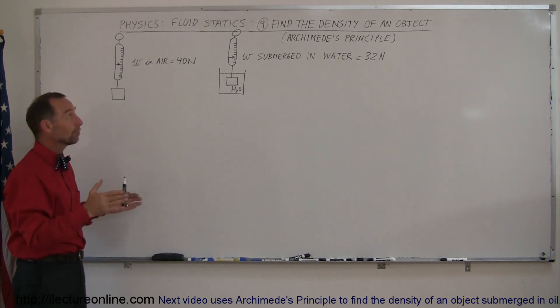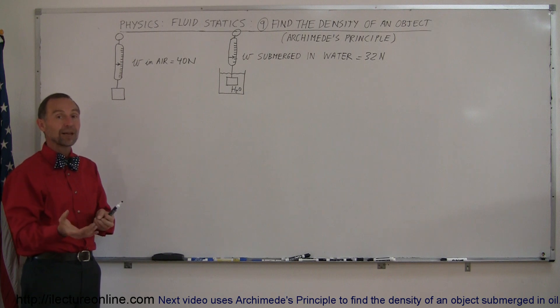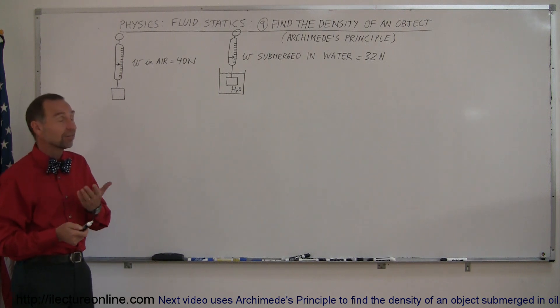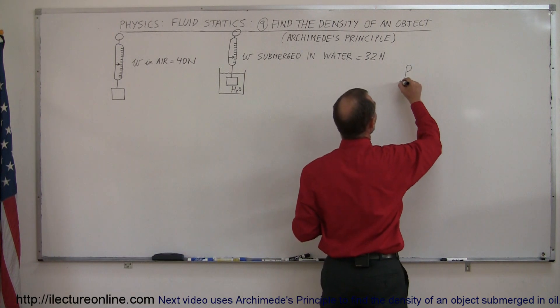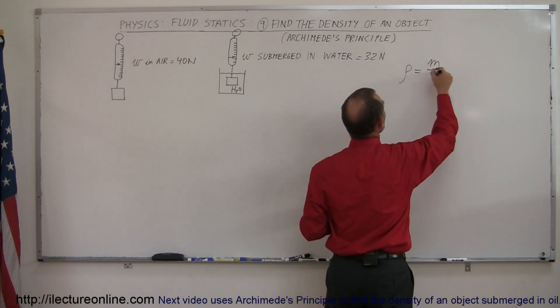And from that, he was able to find the volume of a very strange shaped object, and from that he could figure out the density of the object, because in order to find the density, you have to know the volume.